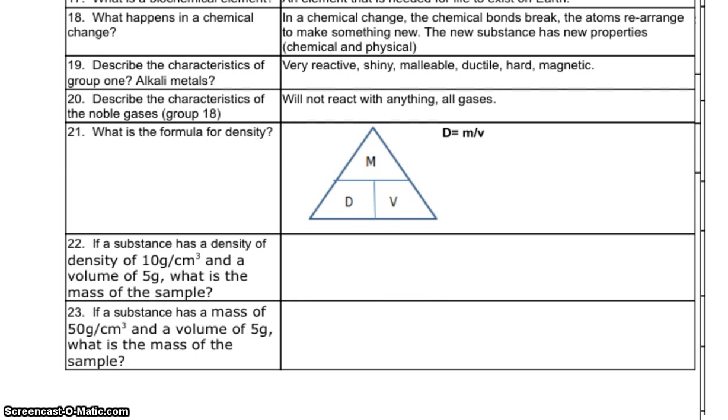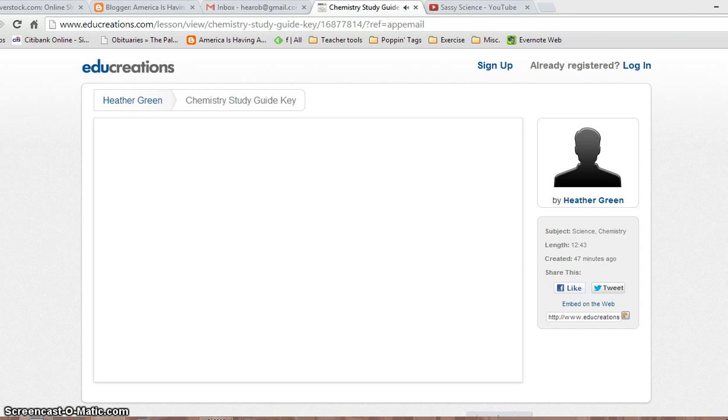Okay, we're back here wrapping it up with 18 through 23. 18. What happens in a chemical change? In a chemical change, the chemical bonds break. The atoms rearrange to make something new. The new substance has new properties, chemical and physical. New properties. Let's look at 19. Describe the characteristics of group or family 1. Remember our groups are vertical, up and down. Group 1 are the very shiny, reactive, malleable, means that they can be bended and shaped. They're ductile, means that they can be stretched out into tubes, maybe for manufacturing or production. They're hard and magnetic. Shiny. Remember, metals. Metals. Group 1.